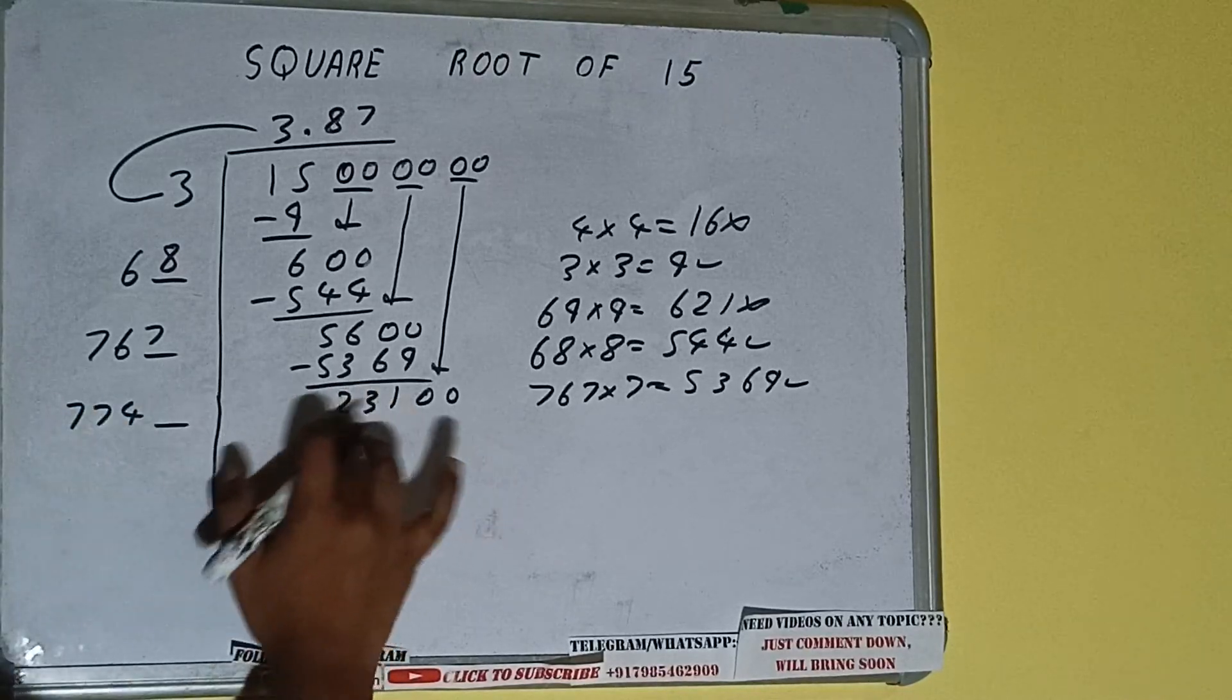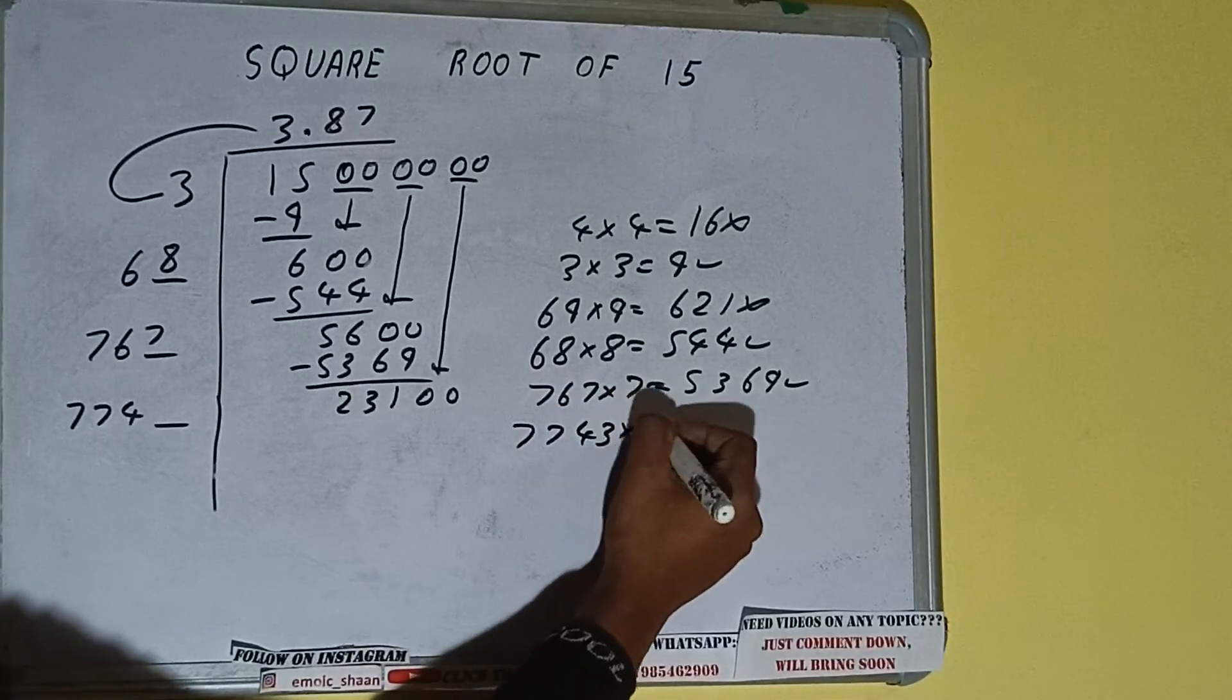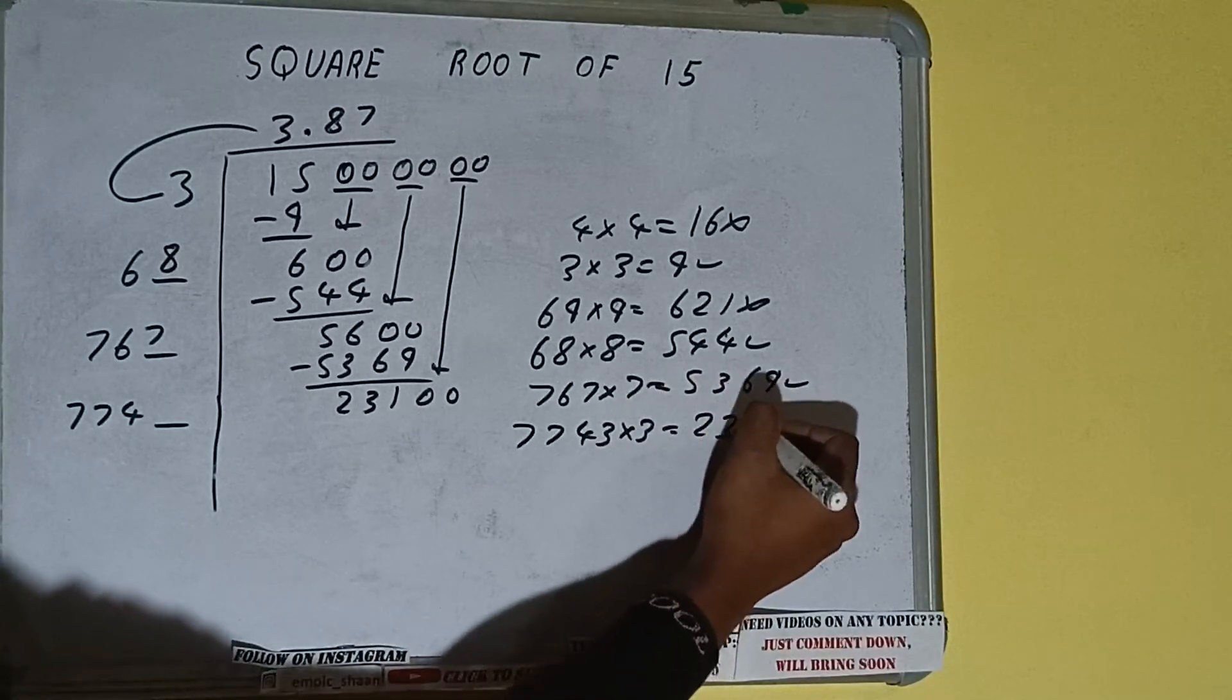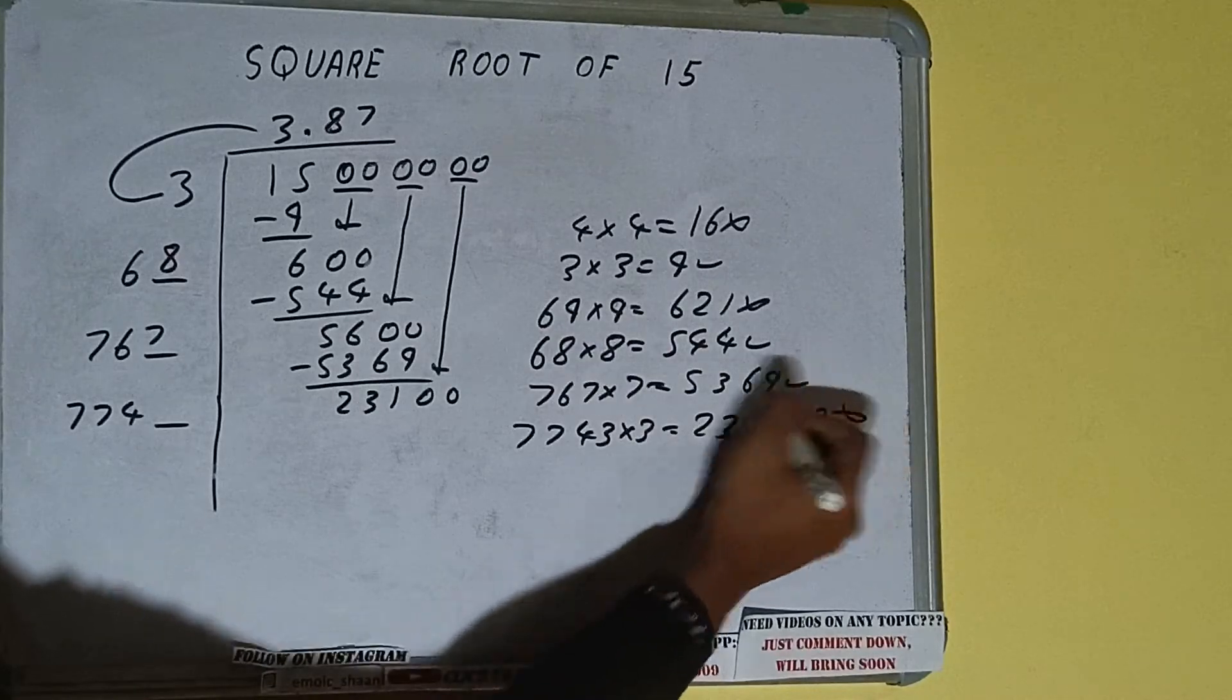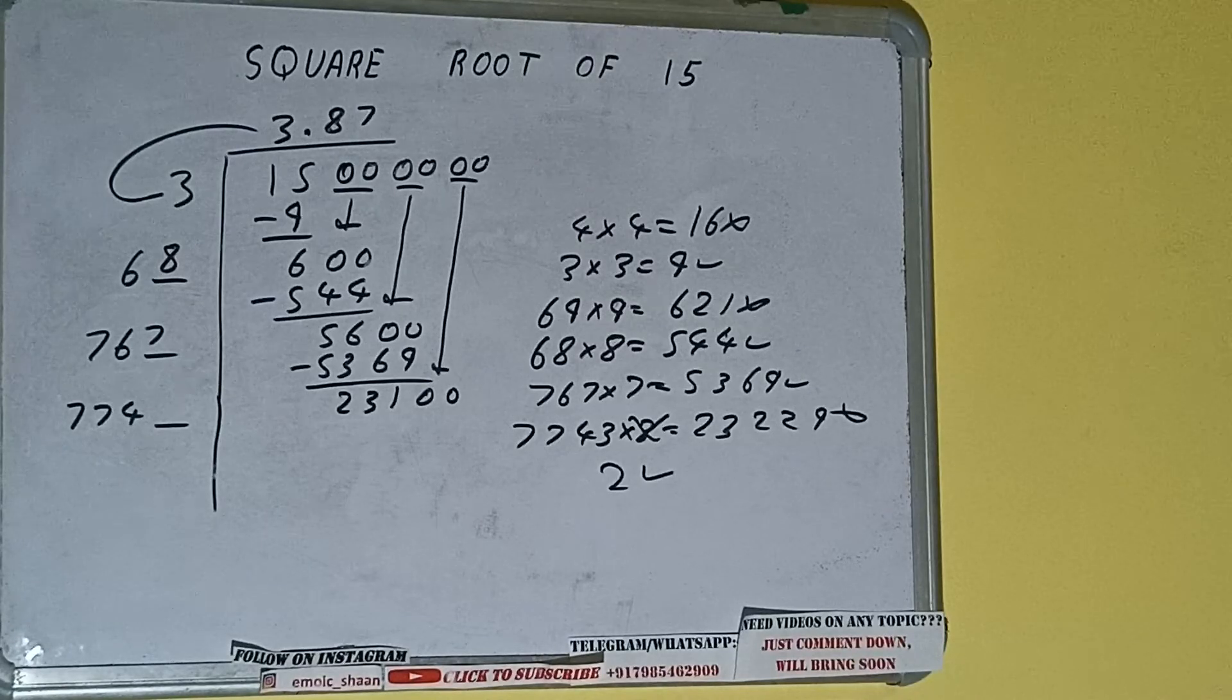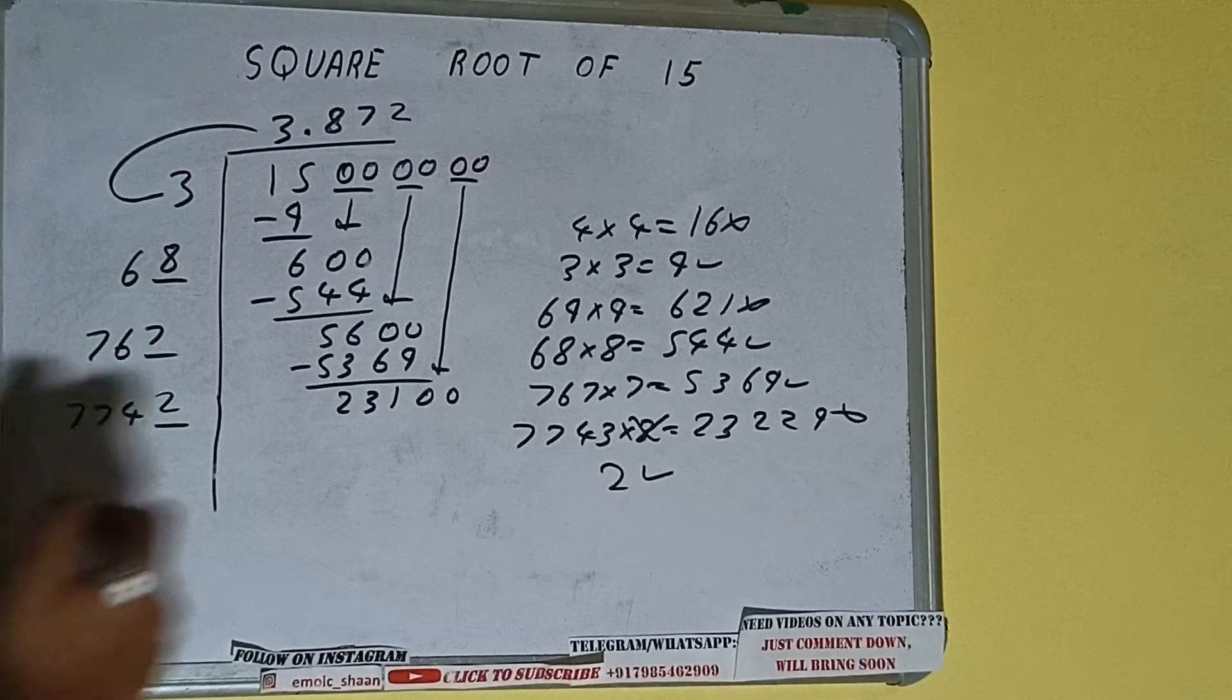Now compare this 7 with this 23. So 7 times 3 is 21, right? So we can try 3 times, 7743 into 3. We can try, and it will be 23229, which is bigger than this number. So we cannot take 3, but with this we can understand that 2 will surely work.